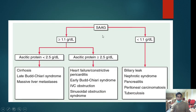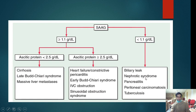Classification based on SAAG: if SAAG — that is serum albumin minus ascitic albumin — is greater than 1.1, the cause is due to portal hypertension. If it is less than 1.1, it is not portal hypertension. Causes with SAAG less than 1.1 include nephrotic syndrome, pancreatitis, tuberculosis, and peritoneal carcinomatosis.